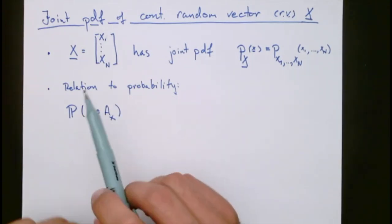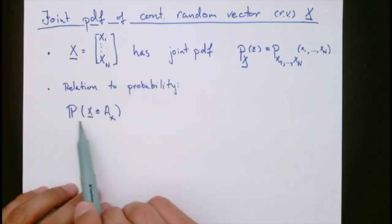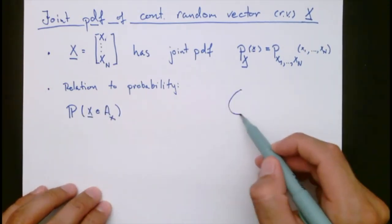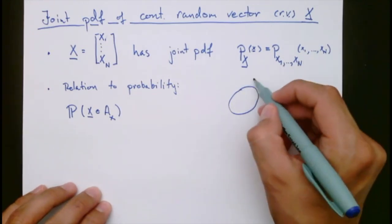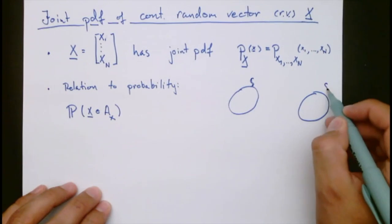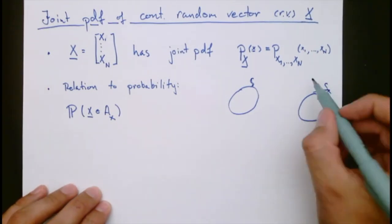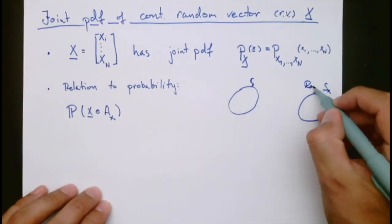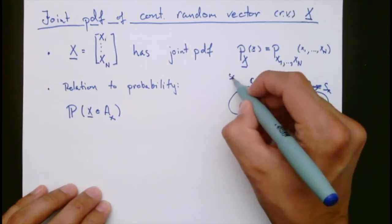As in the scalar case, we have a relation to the probability. So we want to talk about the probability of the random vector ending up in some set Ax. If we go back to our pictogram of the sample space and the range, here we have the sample space.